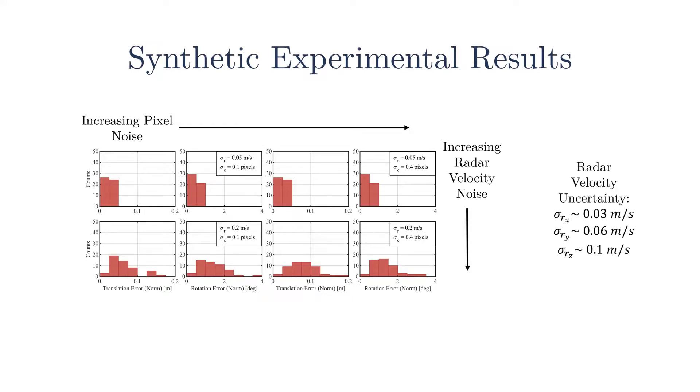For our real world radar settings, we determined the radar velocity uncertainty to be the values on the right. Consequently, we expect our results to perform similarly to the top row of the plot.